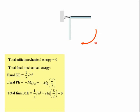Rearranging that equation, we get that omega, the angular velocity, is equal to the square root of Mg times L divided by its moment of inertia. The moment of inertia for a rod pivoted at one end is just equal to one-third times the mass times its length squared. Substituting that into our previous equation for omega, we get that omega is equal to the square root of 3G/L, after some simplification.